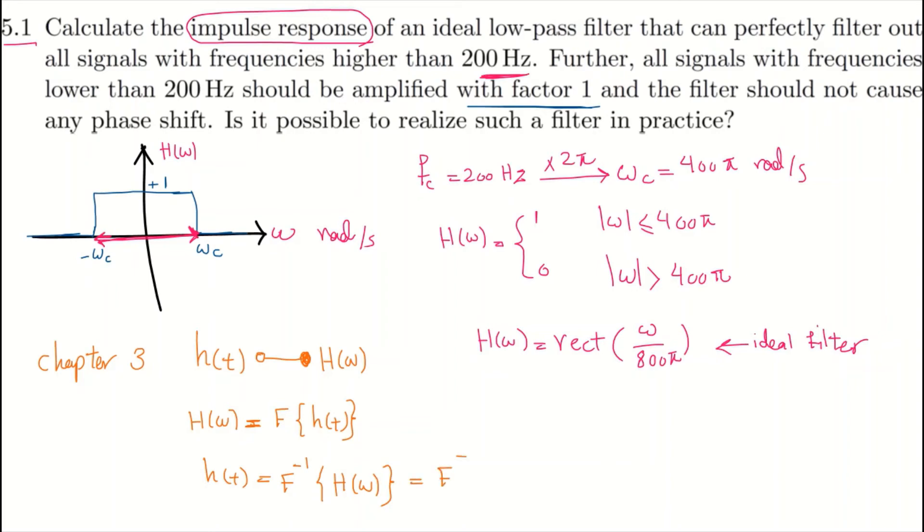Here the frequency response is a rectangular function, omega over 800 times pi. Let me skip the calculations because we have done that a couple of times in the exercise set of chapter 3. So I directly write the inverse Fourier transform of this rectangular function, which is a sinc function: 400 times sinc of 400 times t. So this is the impulse response function, h of t.